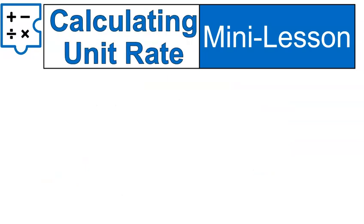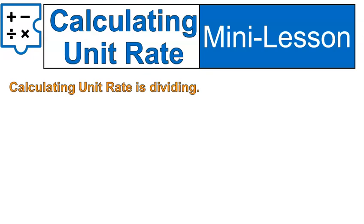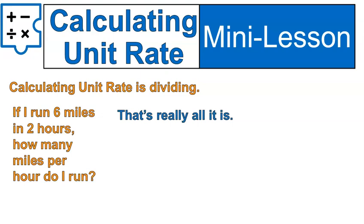Now let's talk about calculating unit rate. Calculating unit rate is dividing — that's really all it is. We can also use simplifying ratios, and I'll show you how to do that. But dividing is often the easiest way to calculate it. So here's an example.